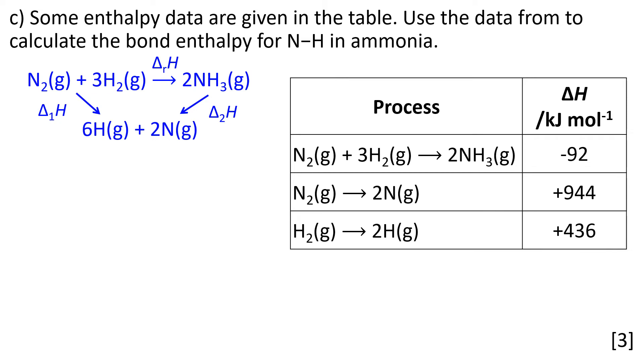If we split those things apart into the atoms, the enthalpy of the reaction ΔᵣH goes from left to right. Δ₁H is the enthalpy change when we split the nitrogen and hydrogen up into atoms. Δ₂H is the enthalpy change when we split the ammonia molecules up into atoms. Sometimes it's worthwhile to represent these as molecules.